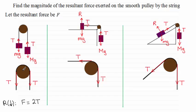Those tensions want to pull the pulley downwards. And that would be our resultant force exerted on the smooth pulley by the string.